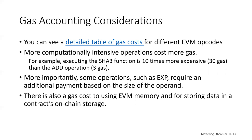You can see a detailed table of gas costs at the provided link. Generally speaking, the more computationally intensive operations are going to cost more gas. For example, executing the SHA-3 function is 10 times more expensive than the add operation, which makes sense because SHA-3 is a hashing operation that requires a lot more computation than simply adding two numbers. There's also a gas cost to using storage, and storing data is one of the most expensive things you can do on the blockchain.